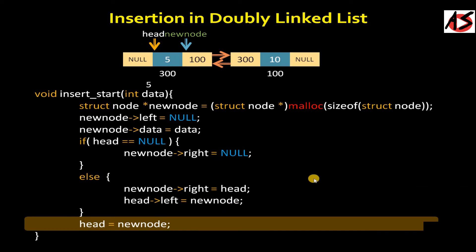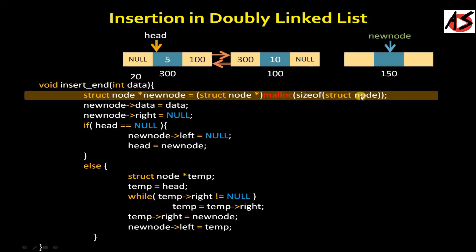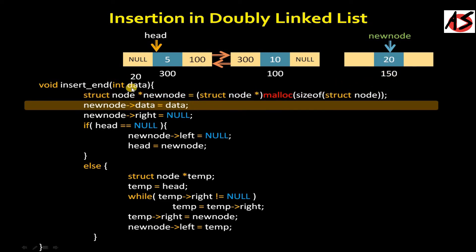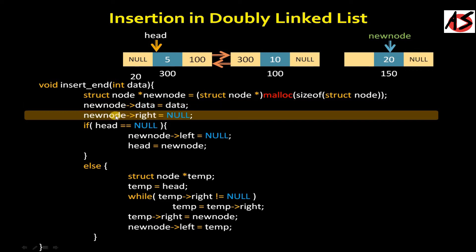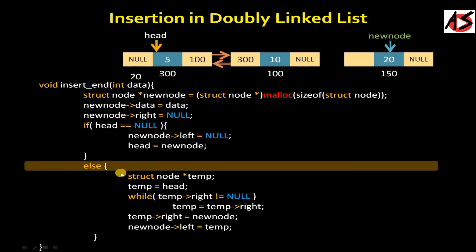Now suppose we want to insert a node at the end, taking data as 20. We allocate memory for the new node with malloc and set the new node's data part to 20. Since it will be the last node, its right pointer is always null. We check if head equals null — if the entire list were empty we would set new node left to null and head to new node — but that is not the case here, so we go to the else part.